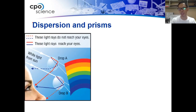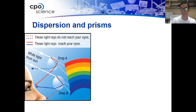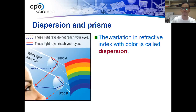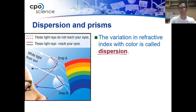Have you ever noticed that when you shine a light on a prism, the light is separated into its component colors — ROYGBIV? We have red, orange, yellow, green, blue, indigo, and violet. This is the reason why light is scattered at different colors — not by reflection, but by dispersion.